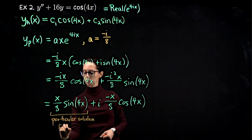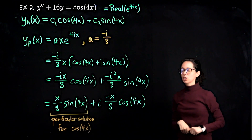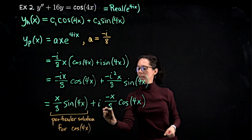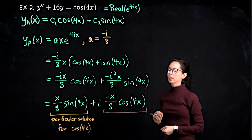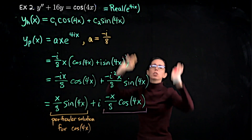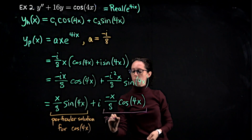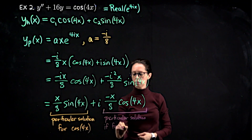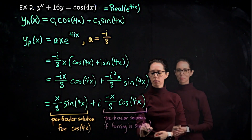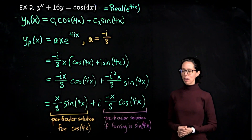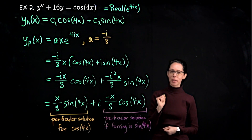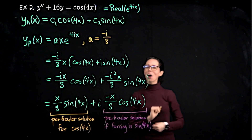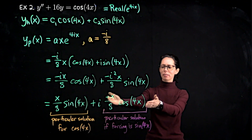So if we want to be done with our problem, we have the homogeneous solution and the particular solution x/8·sin(4x). But there's a bonus: the imaginary part of this complex particular solution solves the equation when the forcing function is sine of 4x. So the particular solution for sin(4x) would be −x/8·cos(4x). Using complexification, we solved both problems at once.